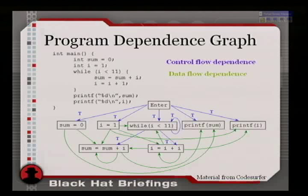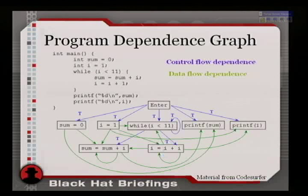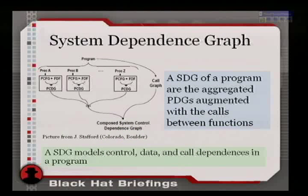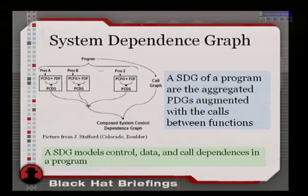The green arrows show data dependencies and the blue arrows show control dependencies. For example, 'sum equals sum plus i' is dependent on i, and 'i equals i plus 1' is also dependent on i because it updates itself. The T stands for taking the true branch. The system dependence graph can be viewed as an aggregate of PDGs augmented with call functions — so we have control, data, and calls.